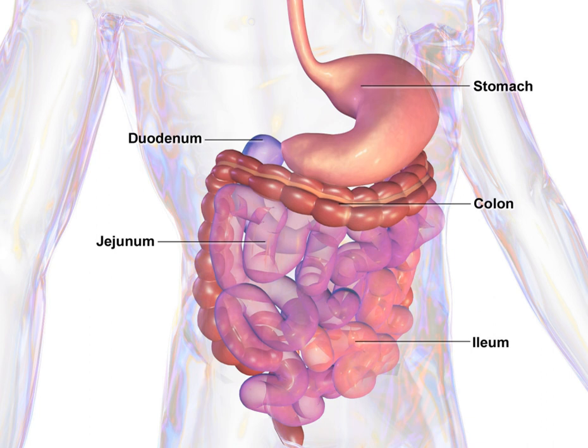The gut is an endoderm-derived structure. At approximately the 16th day of human development, the embryo begins to fold ventrally with the embryo's ventral surface becoming concave in two directions. The sides of the embryo fold in on each other and the head and tail fold toward one another. The result is that a piece of the yolk sac, an endoderm-lined structure in contact with the ventral aspect of the embryo, begins to be pinched off to become the primitive gut. The yolk sac remains connected to the gut tube via the vitelline duct. Usually this structure regresses during development; in cases where it does not, it is known as Meckel's diverticulum.